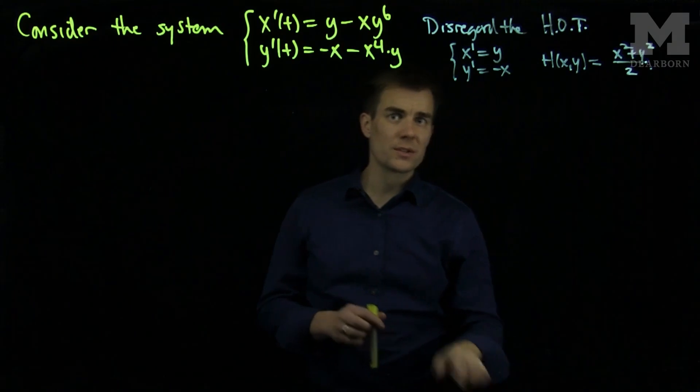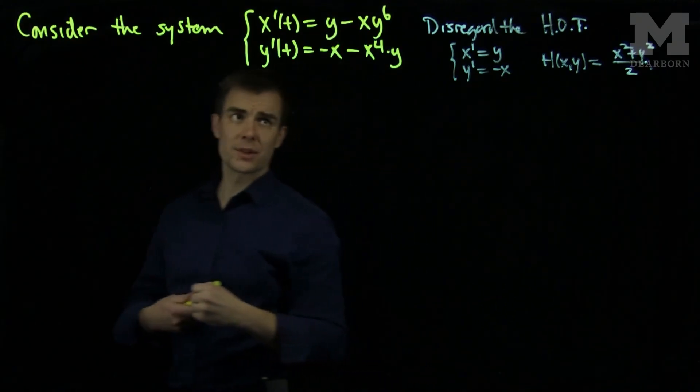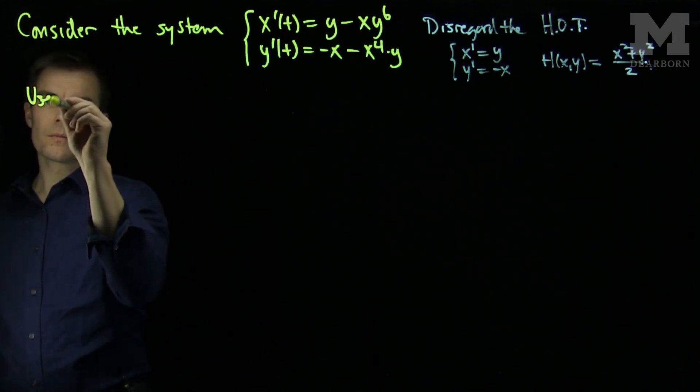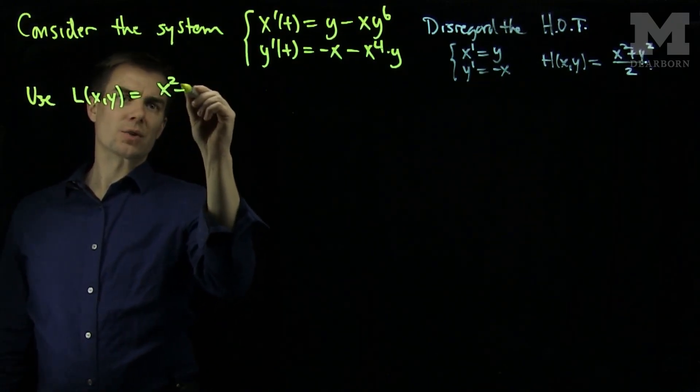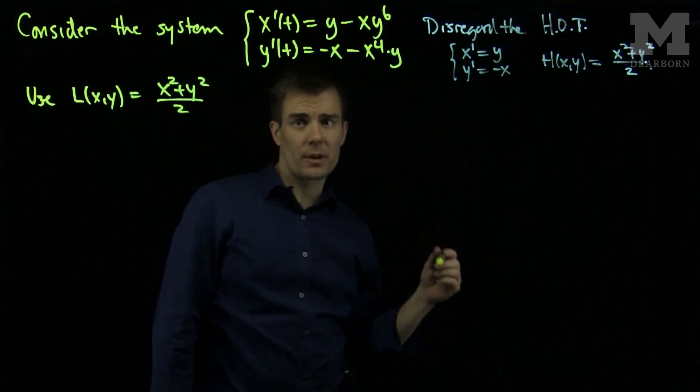So what I will do is, I will use this Hamiltonian for the approximate system to construct a Lyapunov function for the principal system. So let's now use L of x and y, which is x squared plus y squared over 2 as our candidate for Lyapunov function.